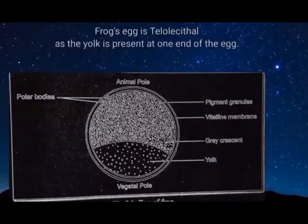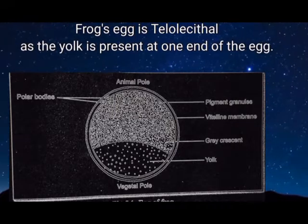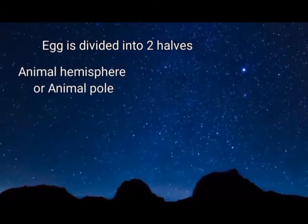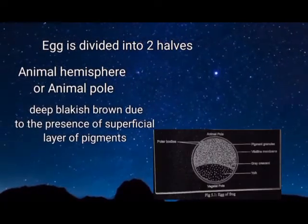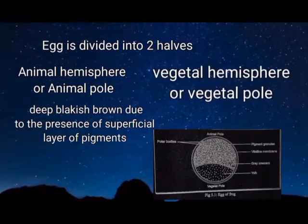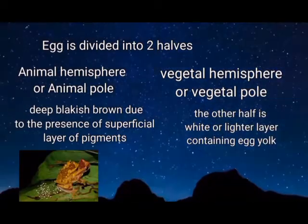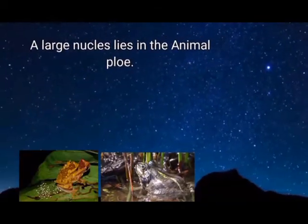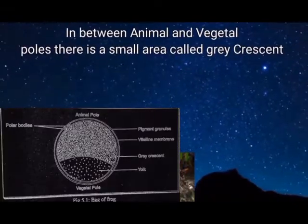The egg of frog is telolecithal, meaning yolk is present at one end of the egg. The egg is divided into two halves: one half is deep blackish-brown due to the presence of a superficial layer of pigment, called the animal hemisphere or animal pole. The other half is white or lighter, containing yolk, called the vegetal hemisphere or vegetal pole. A large nucleus lies in the pigmented half or animal pole.